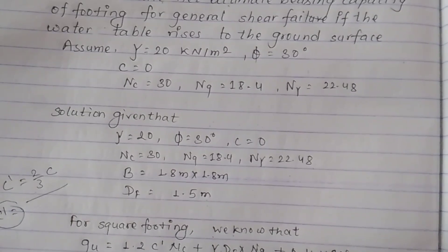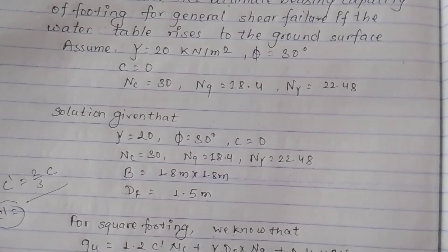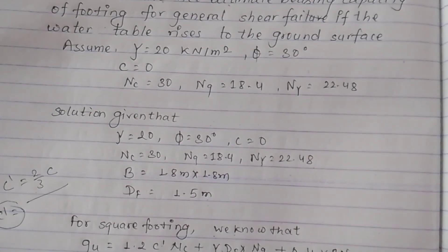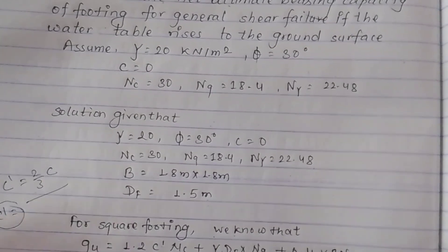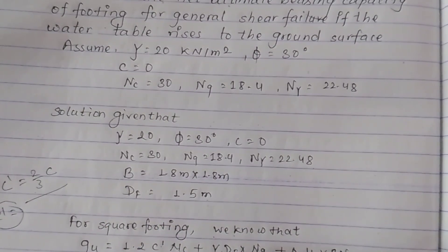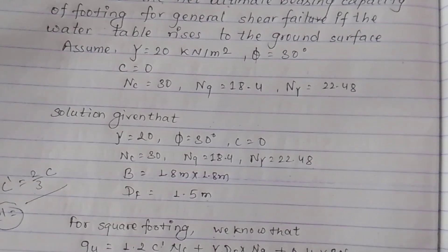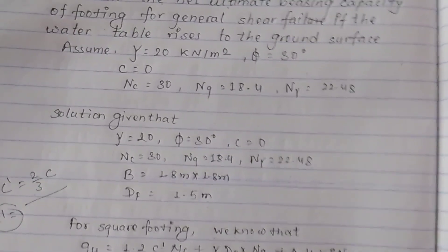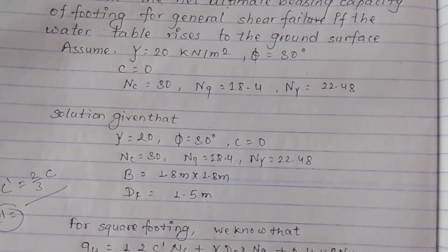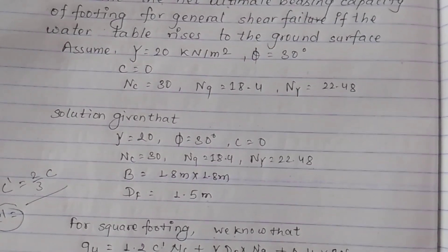1.2c, depth term: gamma × 20, plus the B into B size into Nγ — substituting values into the bearing capacity formula for the square footing with c' equal to zero.